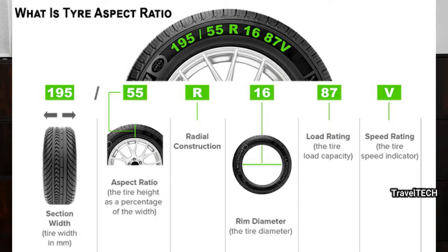Now let's look at how you can actually read a tire. On the screen you can see a diagram with numbers written on the tire — for example: 195/55 R16 87V. Each number indicates one aspect of the tire. The first number, 195, indicates the section width in millimeters — that is, the width of the tire. 195 means approximately 19.5 centimeters, and it varies according to the manufacturer.